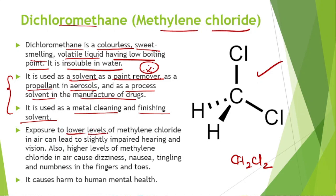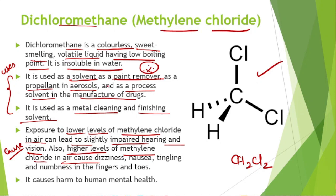Exposure to lower levels of methylene chloride in air can lead to slightly impaired hearing and impaired vision. Higher levels can cause dizziness, nausea, tingling and numbness in fingers and toes. It can also cause harm to mental health.